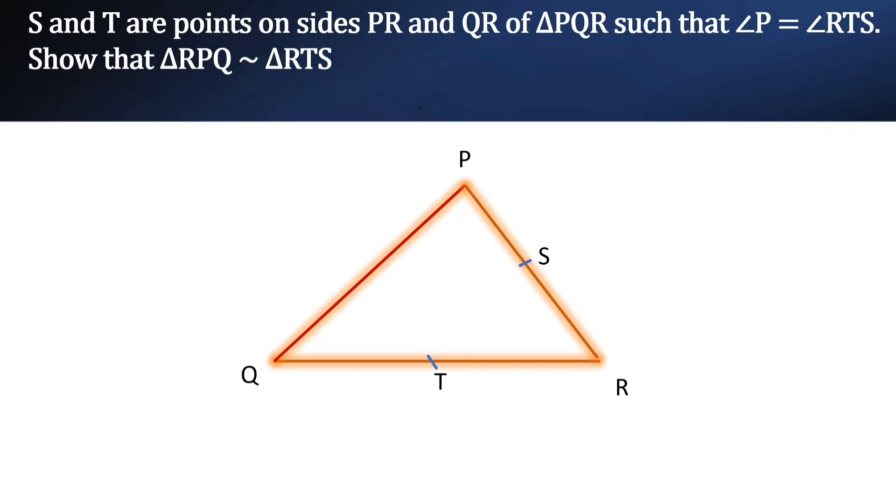Now let us join TS and we are also given angle P is equal to angle RTS. Now we have two triangles. We have to show that triangle RPQ is similar to triangle RTS.